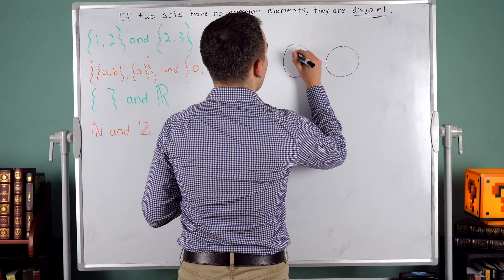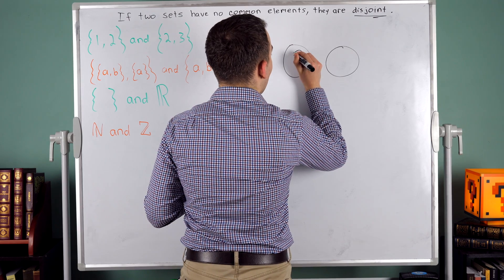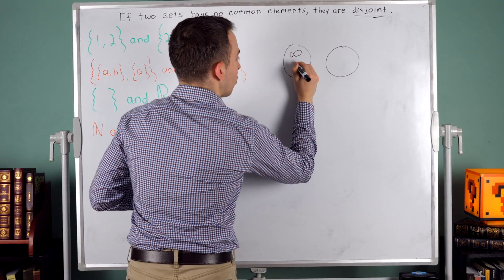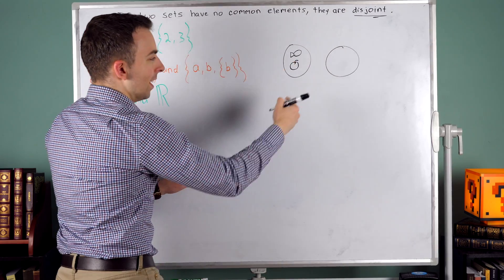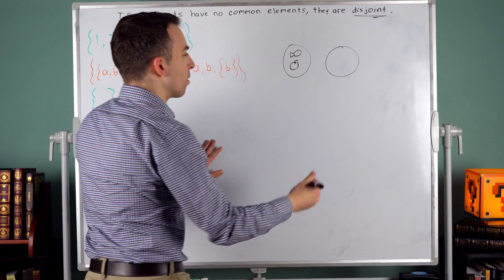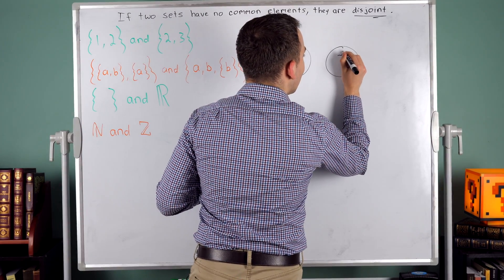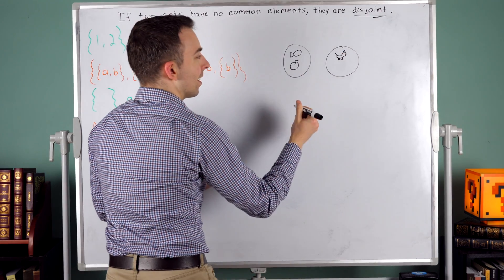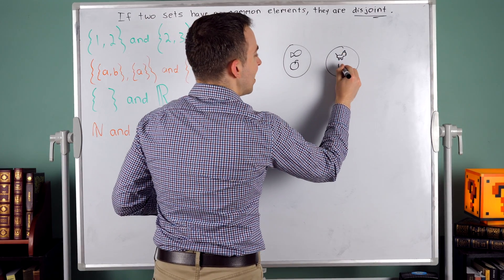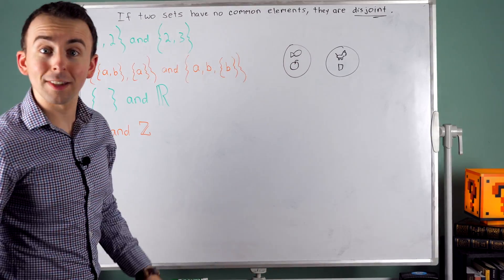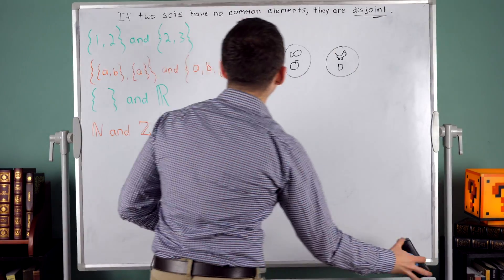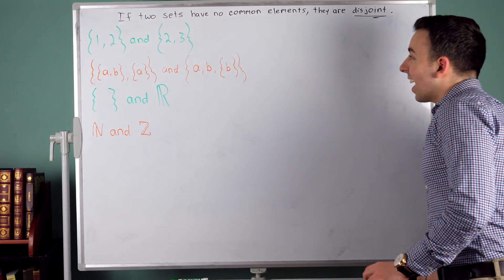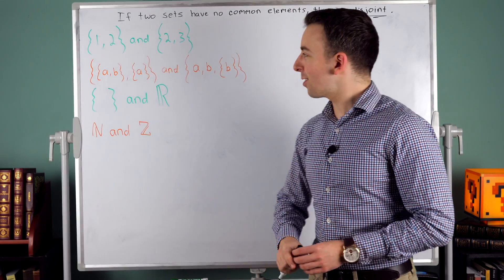For example, sets don't just have to have numbers. So you might have fish and apple in one set, and then in the other set, something like cat and cheese. Those are disjoint sets — they've got nothing in common. Alright, so let's look at some examples that don't highlight my artistic skills.